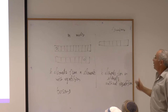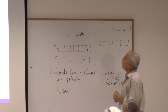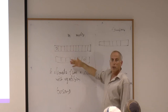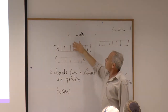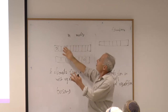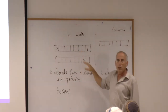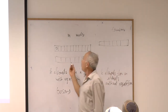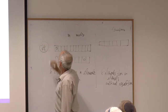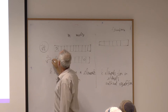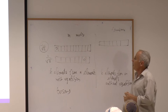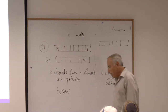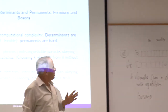A single boson can be in a superposition of several positions — a quantum probabilistic distribution. It can be with probability one-half in one position and one-half in another. What makes it more complicated is that these probabilities are represented not by real numbers but by complex numbers — coefficients like one over square root two. Similarly, K bosons can be in a superposition over all ways of choosing K elements from N elements.